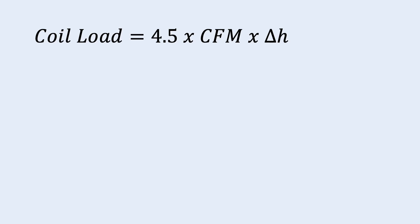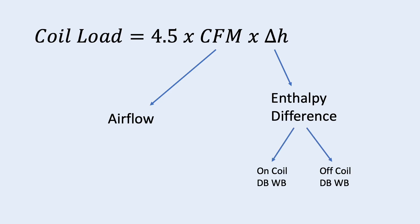Coil load is equal to 4.5 times CFM times delta H. CFM is airflow, delta H is enthalpy difference. To find the enthalpy difference, we need to know the on-coil and off-coil conditions.